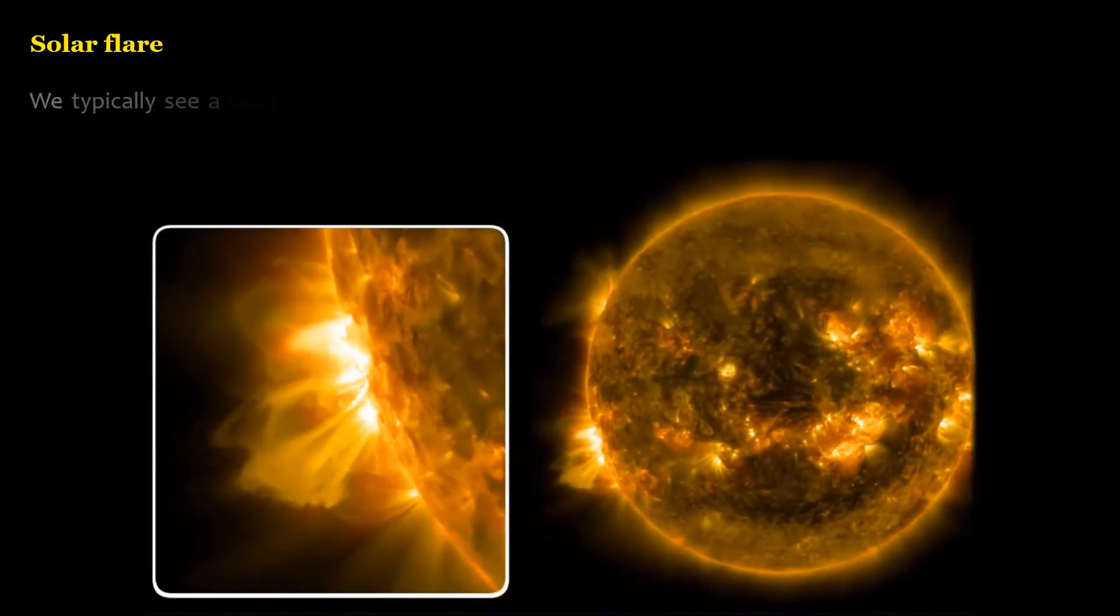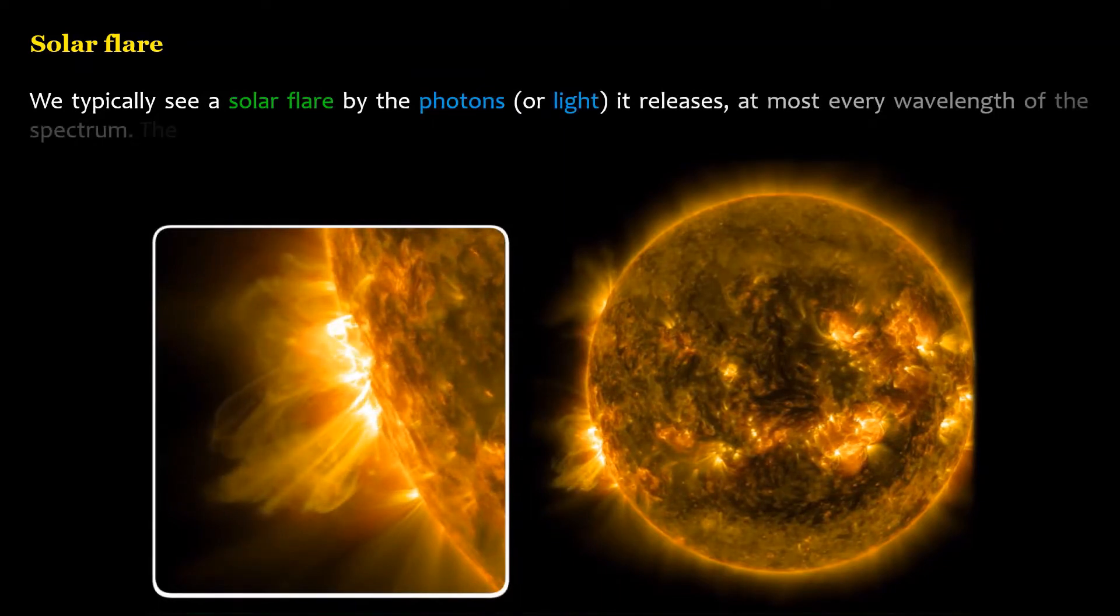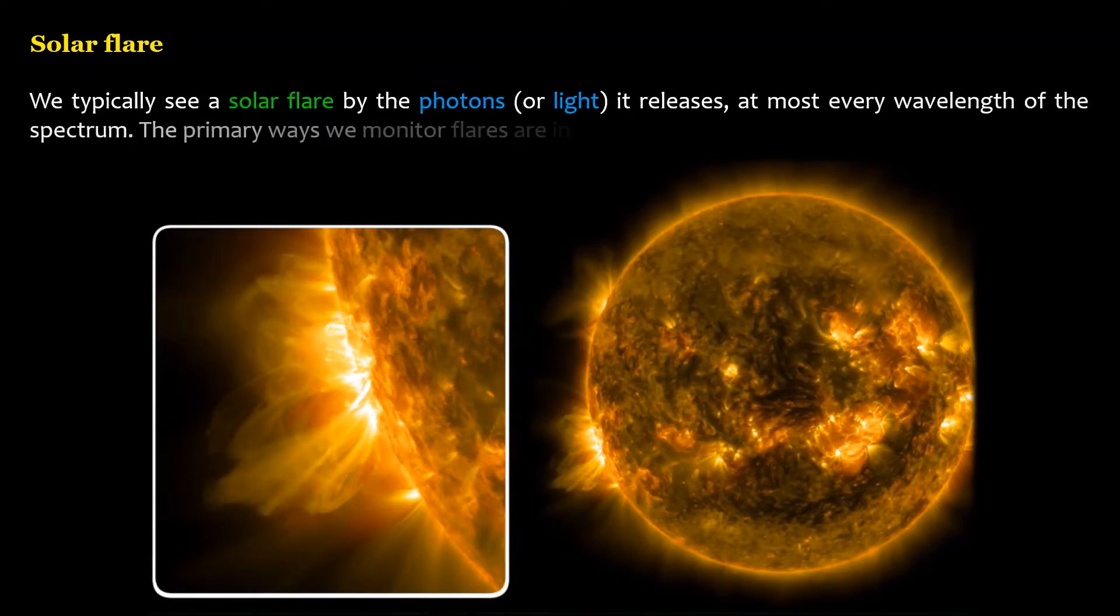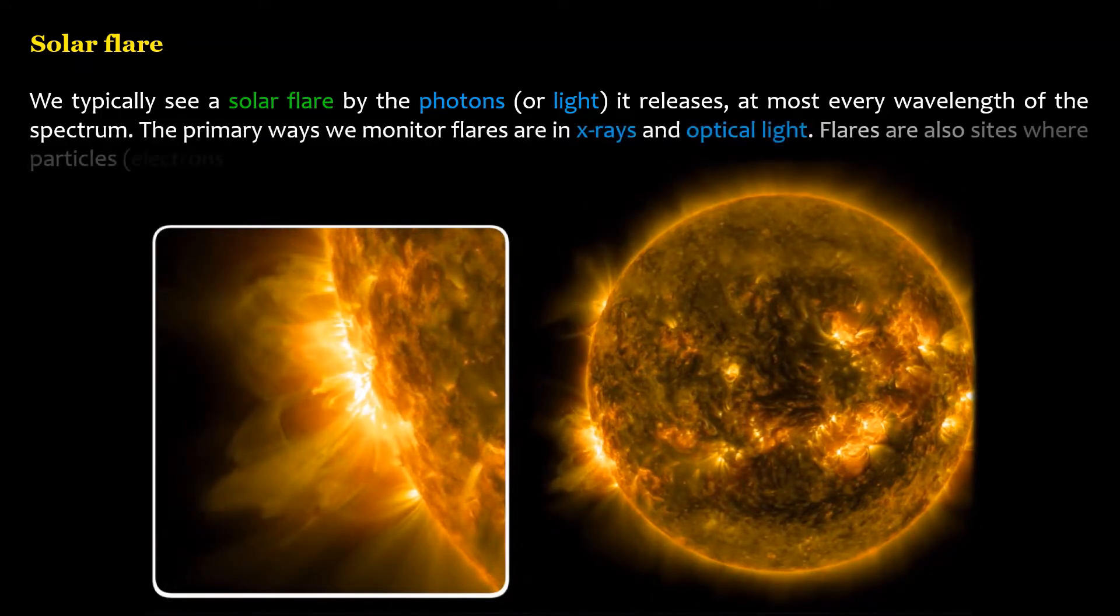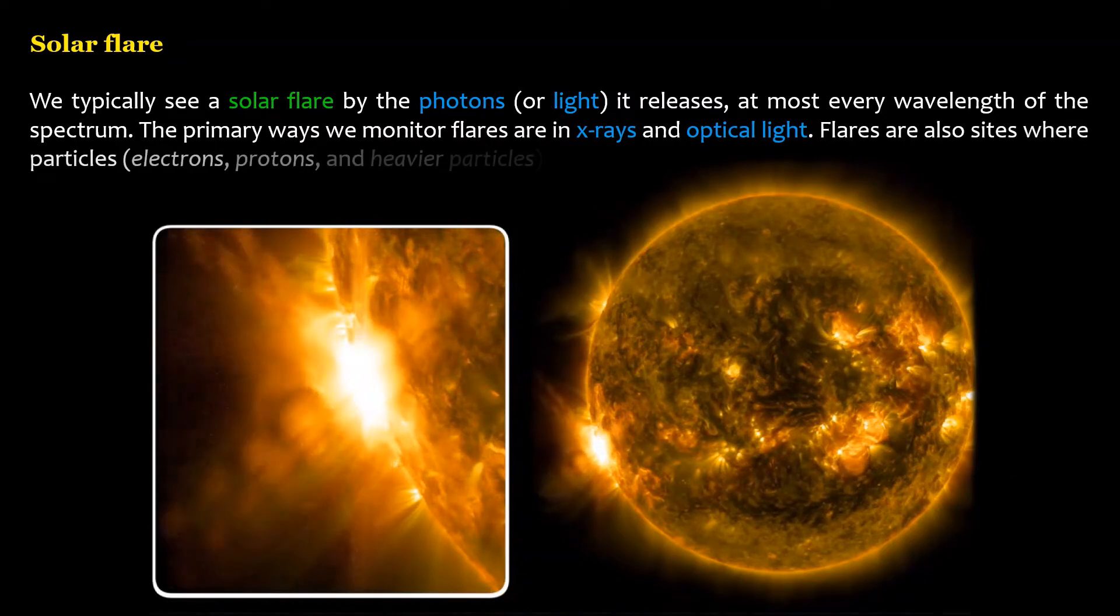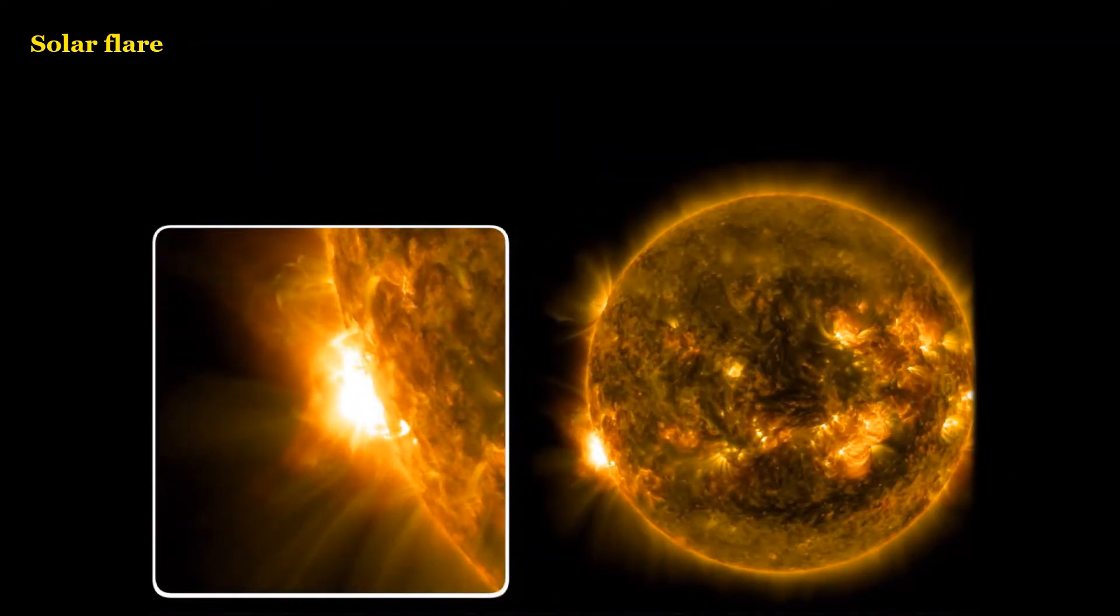We typically see a solar flare by the photons, or light, it releases, at most every wavelength of the spectrum. The primary ways we monitor flares are in X-rays and optical light. Flares are also sites where particles, electrons, protons, and heavier particles, are accelerated.